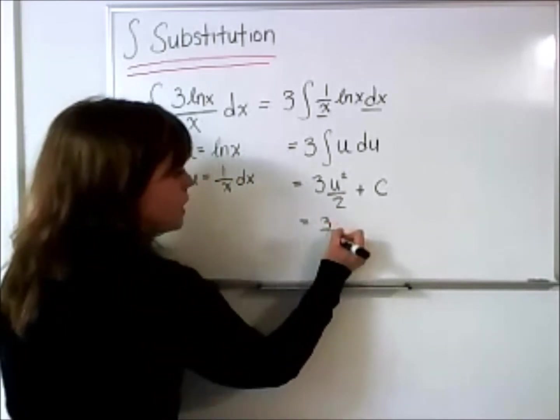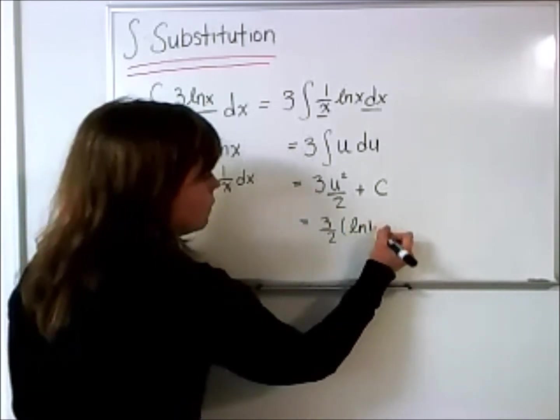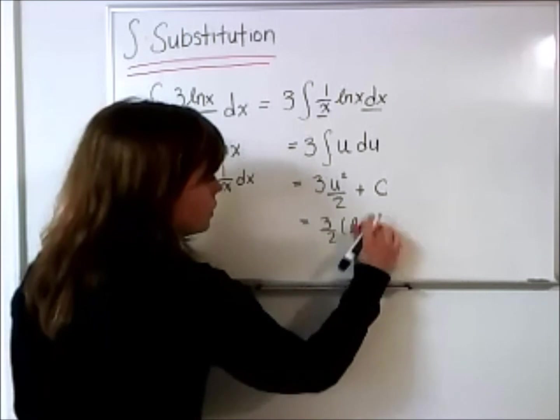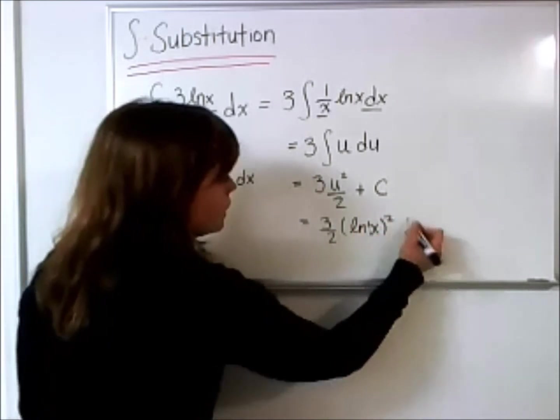So, in this case, we'll have 3 halves times quantity, natural log of x, quantity squared, plus c.